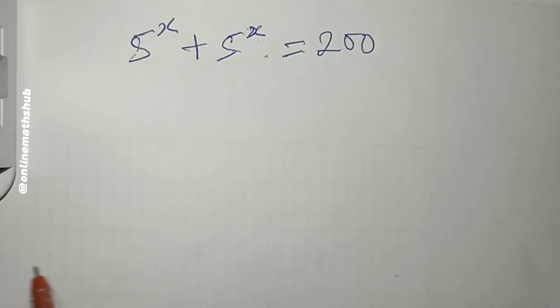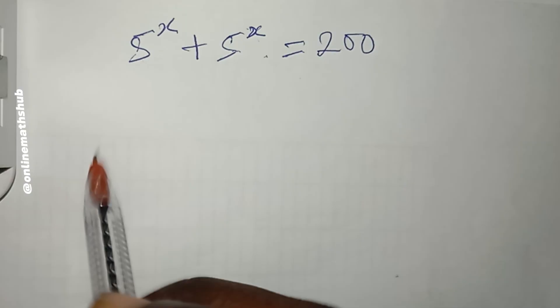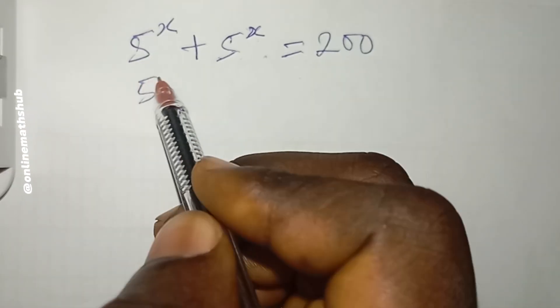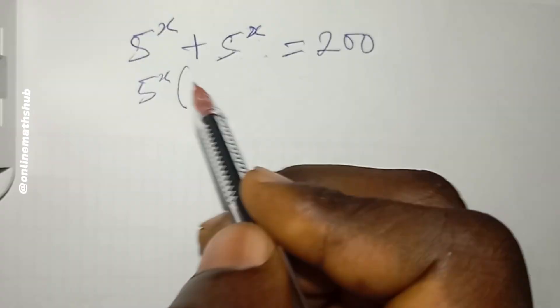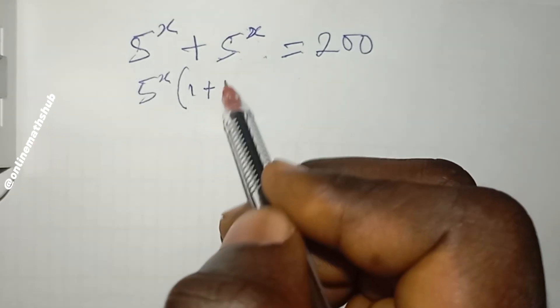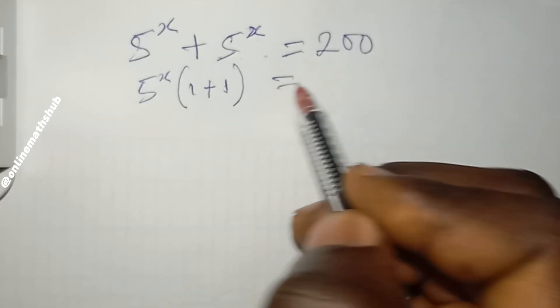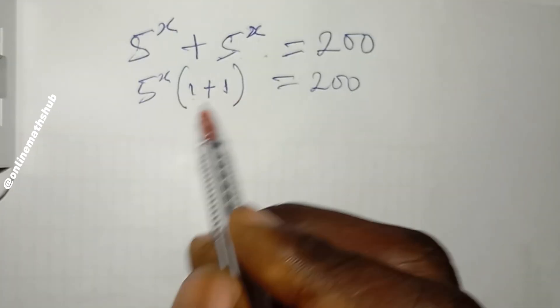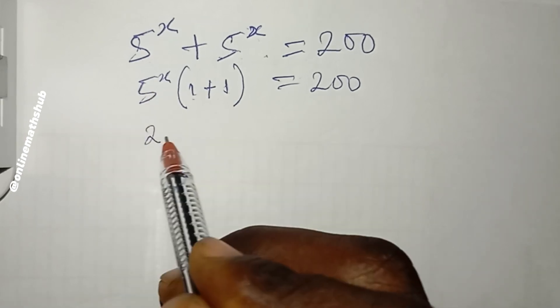Having done that, we're going to proceed into this video. The first thing I want to do is factorize 5^x from here. If I do that, 1 will remain on both terms, and this is still equal to 200. Obviously 1 + 1 = 2, so this is now 2 × 5^x = 200.